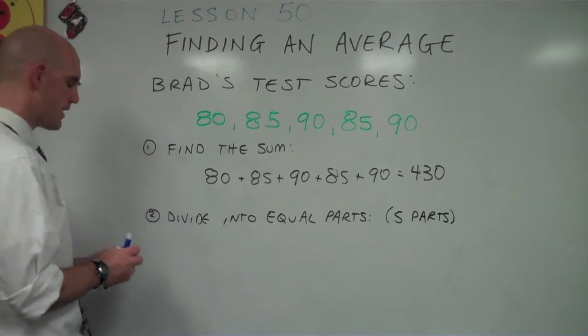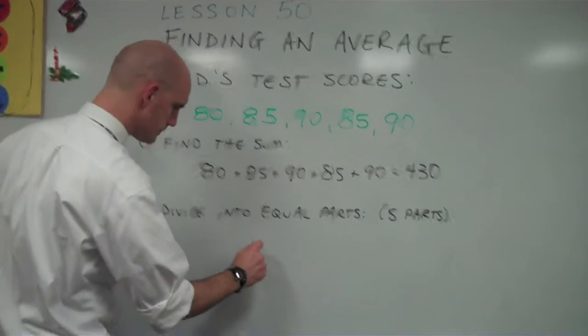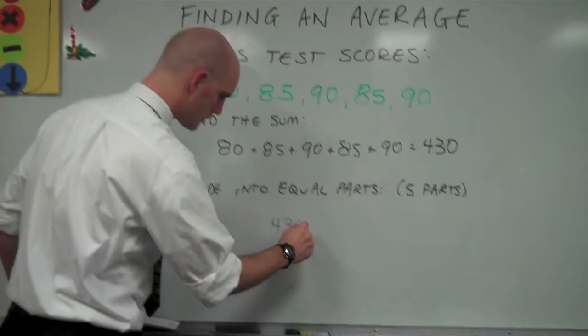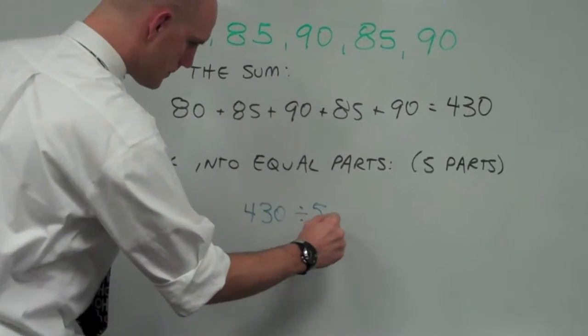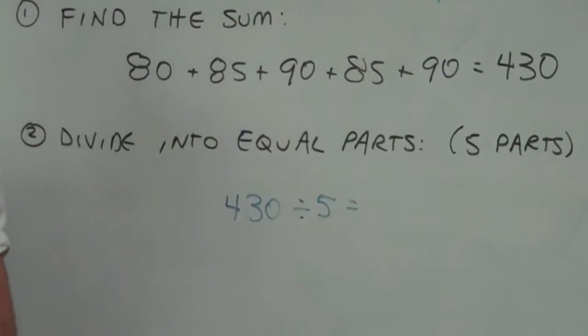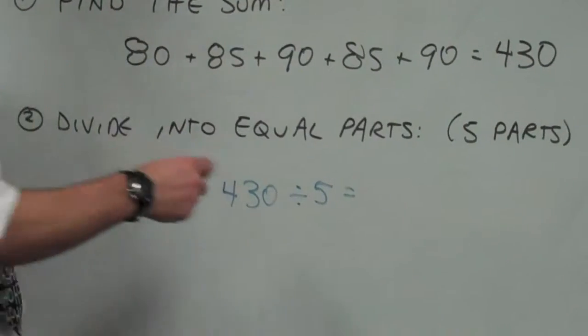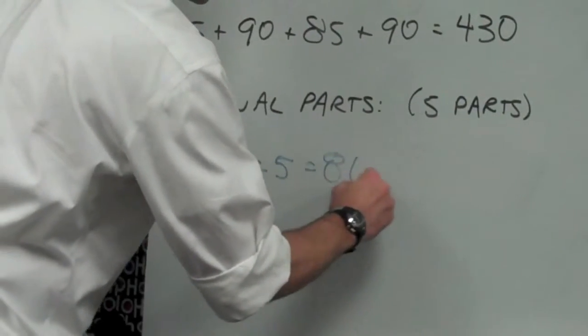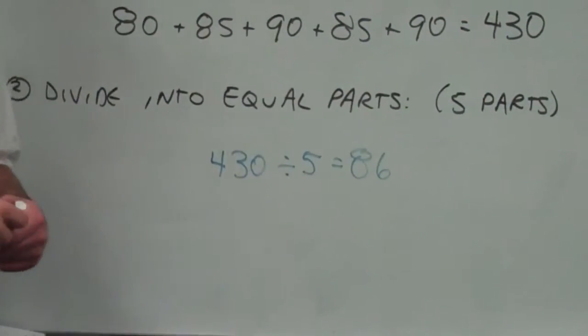When we take 430 and divide by five, we end up getting an average of 86 per test.